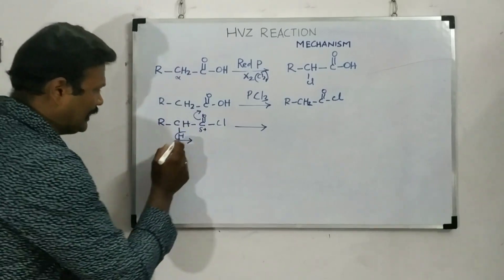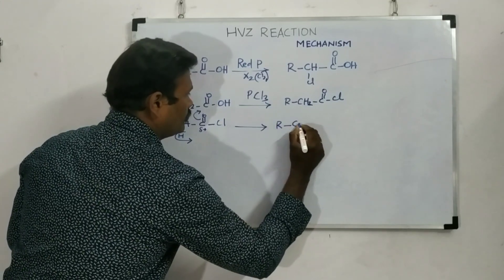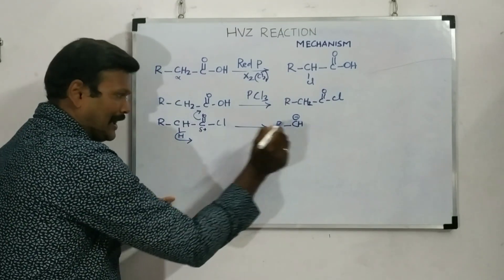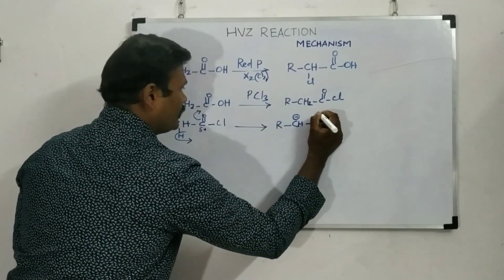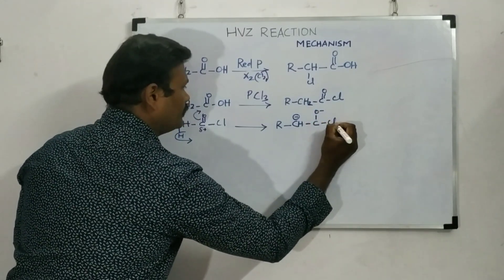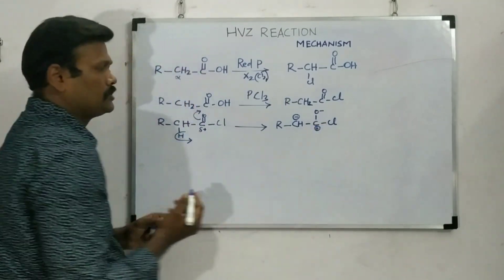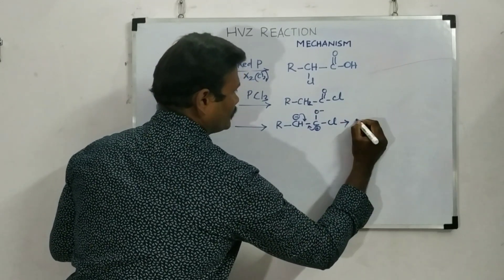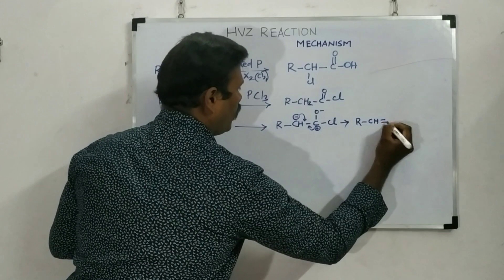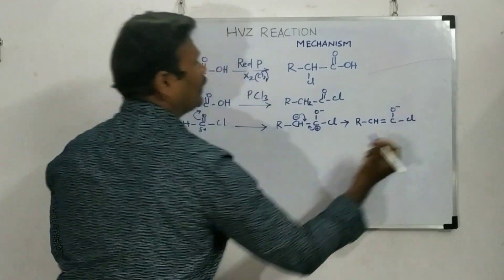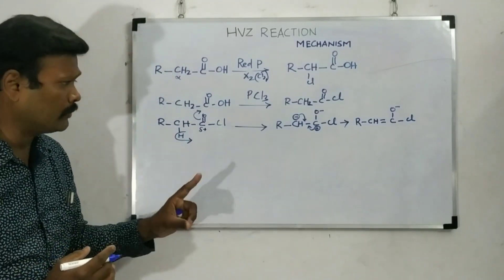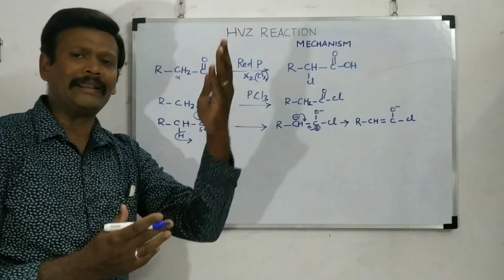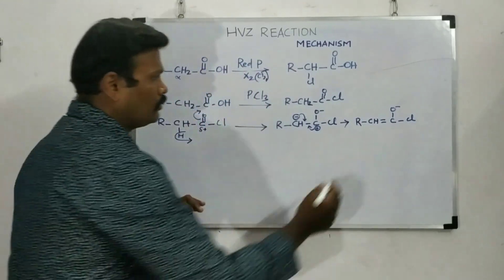Because that carbonyl carbon attains a positive charge, the electrons in the adjacent C-H bond shift. The alpha-H leaves as H⁺, breaking that bond and leaving a negative charge on the alpha carbon. Combined with the positive carbonyl carbon, a new double bond forms, giving us RCH=C(O⁻)Cl — an enolate-like intermediate. This is what the molecule forms to stabilize itself.